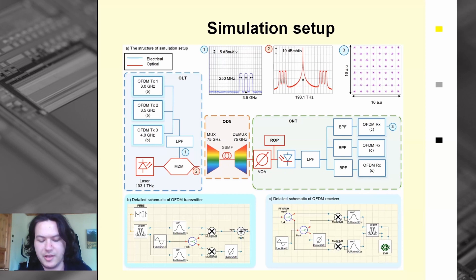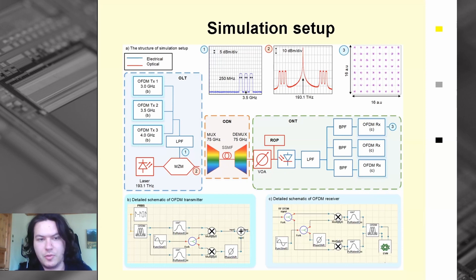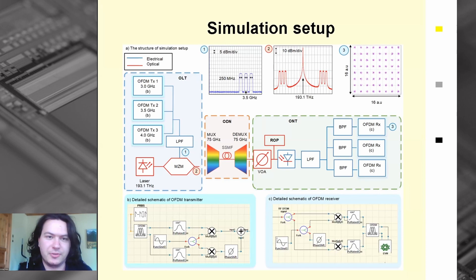The OLT consists of a continuous wave laser at 193.1 THz with 6 dBm output power, modulated by three combined OFDM channels using a Mach-Zehnder modulator with 4 dB insertion loss and 20 dB extinction ratio. The driving voltage is 7 V with a bias of 3.5 V. The ODN uses a 75 GHz multiplexer/demultiplexer and standard single-mode fiber with 0.2 dB/km attenuation and 18 ps/nm/km dispersion. The OTU includes a standard 10 GHz PIN with minus 90 dBm sensitivity and 0.7 A/W responsivity.